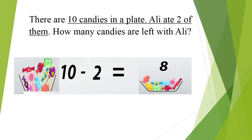Yes children, what we have to do? Yes, we have to subtract, very good. So which operation we will use? We will use subtraction. What are the numbers? Yes, 10 candies in a plate, and how many candies Ali ate? Ali ate 2 of them. So what we have to do? We have to minus 2 candies from 10 candies. So 10 minus 2 is equal to 8. Very good.